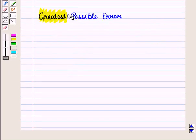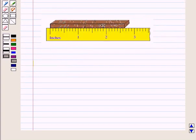Now let us discuss greatest possible error. A block of wood is placed along the edge of a ruler that is marked in terms of an inch. From the ruler we might say that block of wood is 2.7 inches long.